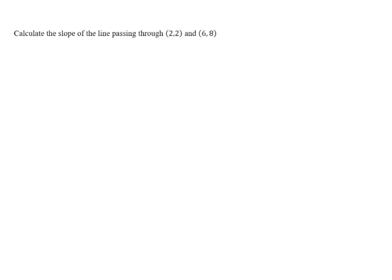Calculate the slope of the line passing through 2,2 and 6,8. We have a formula for calculating the slope of a line if we know two points on that line. The formula is m slope equals y2 minus y1 over x2 minus x1.